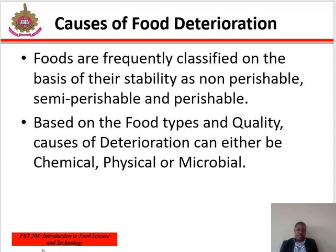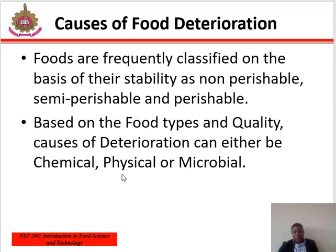Physical factors consist of changes in food texture and changes in food composition and physical attributes, and these are very obvious. Microbial factors are caused due to the presence of pests or other damaging insects or their droppings, and this is a cause for alarm. They can result in a product that is unsightly and significant in food safety hazards.